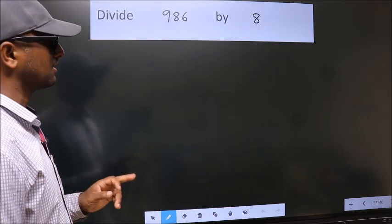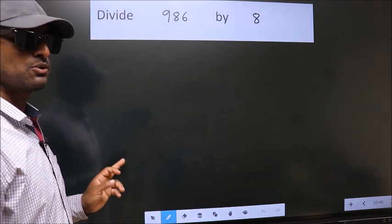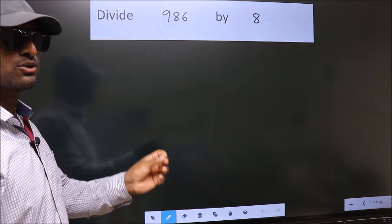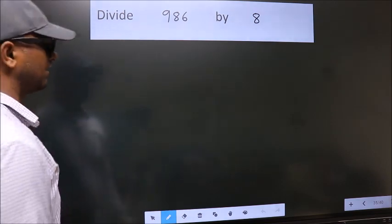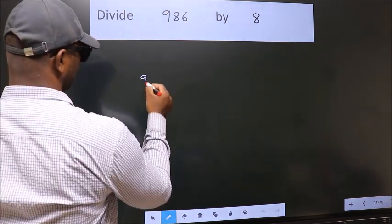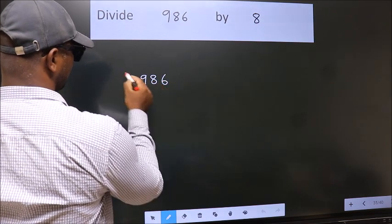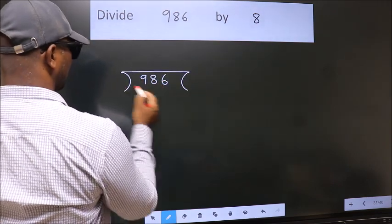Divide 986 by 8. To do this division, we should frame it in this way: 986 here, 8 here.